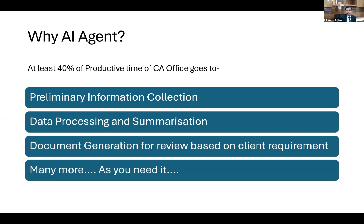Then the second step is processing the client information and summarizing it — either you summarize it for your staff to take action on, or your staff summarizes it for you. The third step is document generation for review based on client requirements. There is a lot of documentation involved in our day-to-day CA firm operations, and we spend a lot of time generating and reviewing documents.